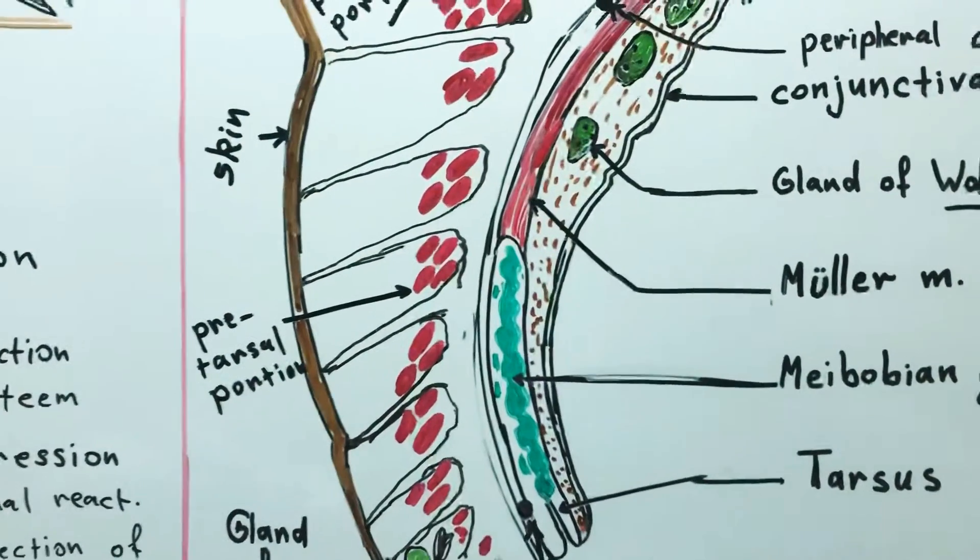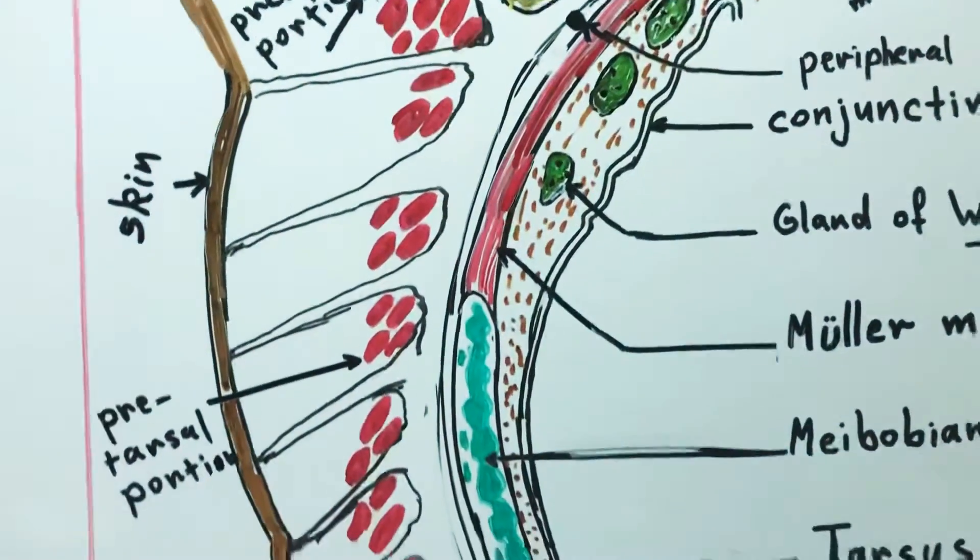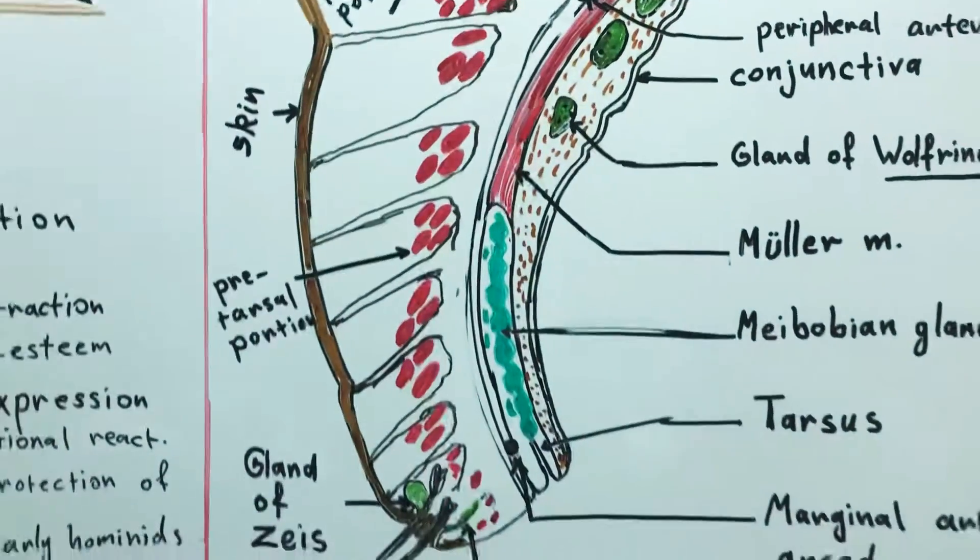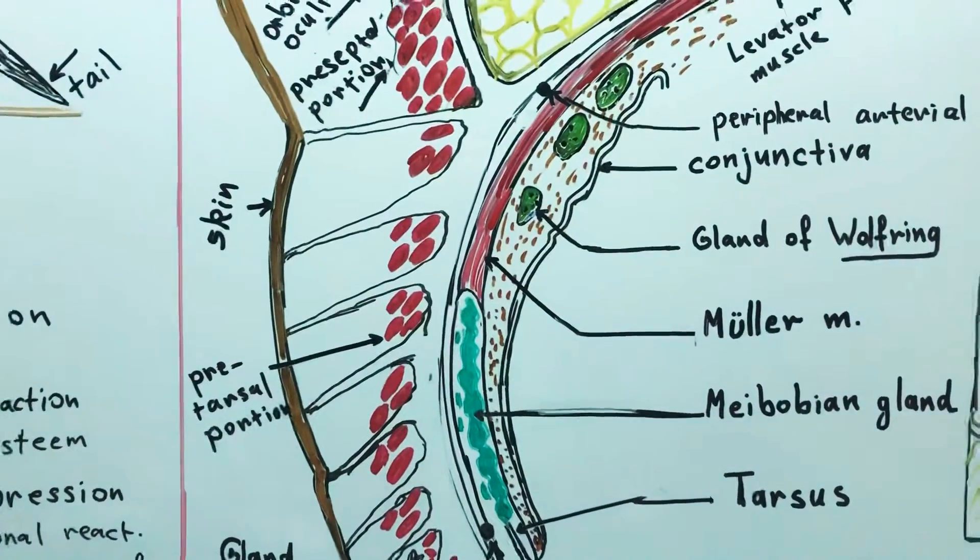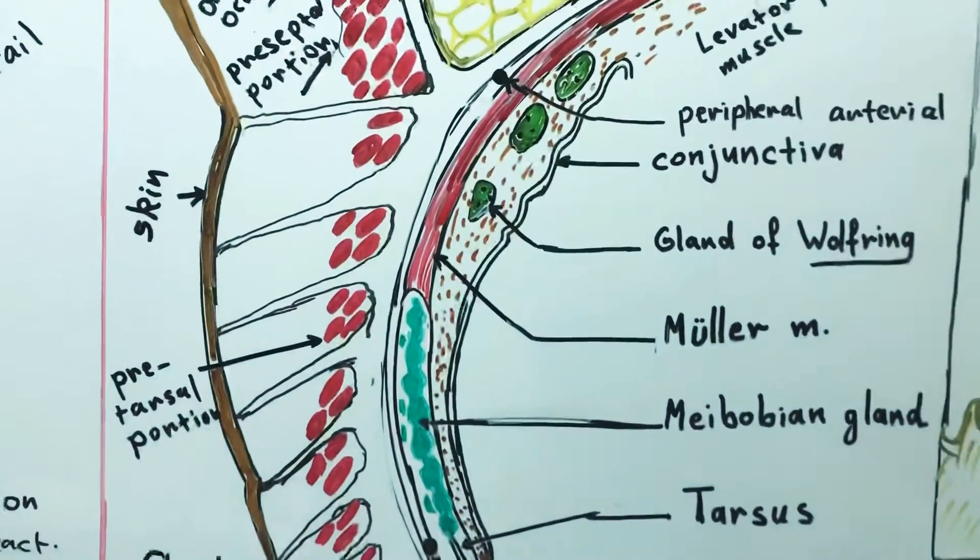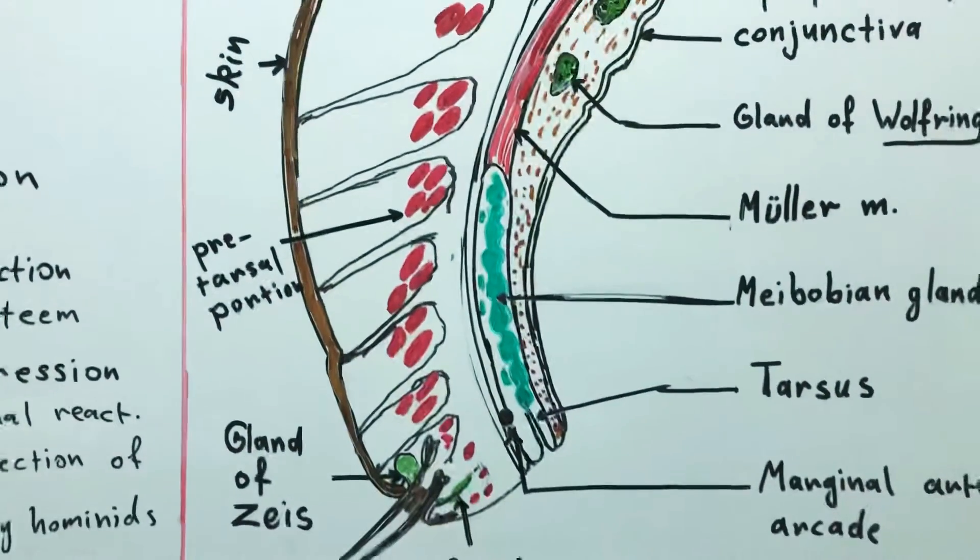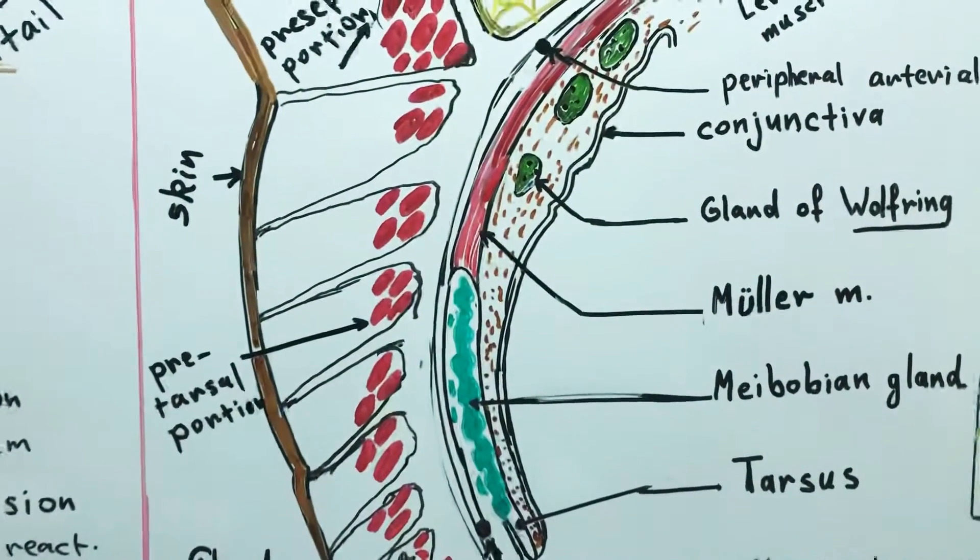The subcutaneous tissue of the eyelid is found beneath the dermis. It is a loose connective tissue that has blood vessels, nerve endings, and fat lobules.